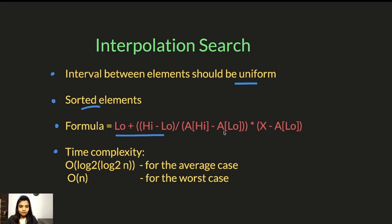I will explain it further with an example. So time complexity is big O of log two of log two n. This is for average case. And for worst case, it is big O of n.